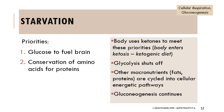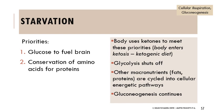In starvation, the body focuses on getting glucose to fuel the brain and conserving amino acids for proteins. The body becomes increasingly dependent on ketones. Glycolysis is limited due to glucose scarcity; gluconeogenesis continues trying to produce glucose for the brain; and fats and proteins are cycled into these pathways. Starvation is an extreme version of the post-absorptive state.